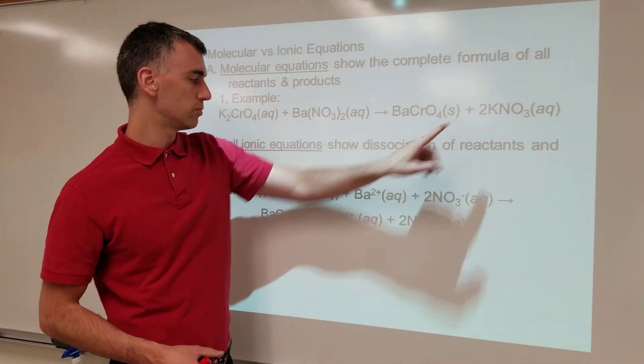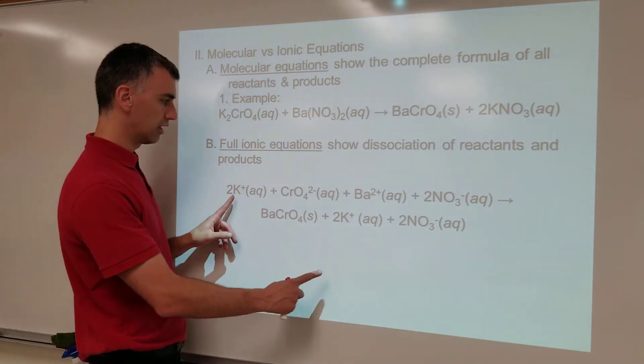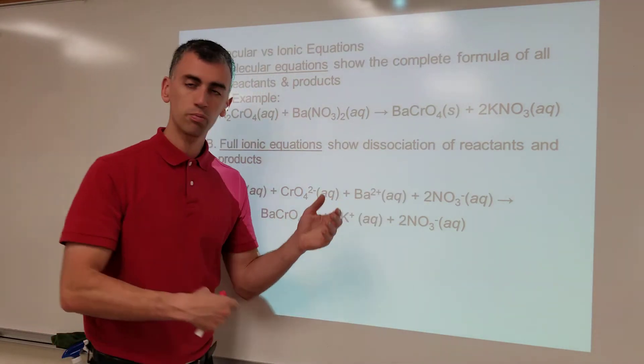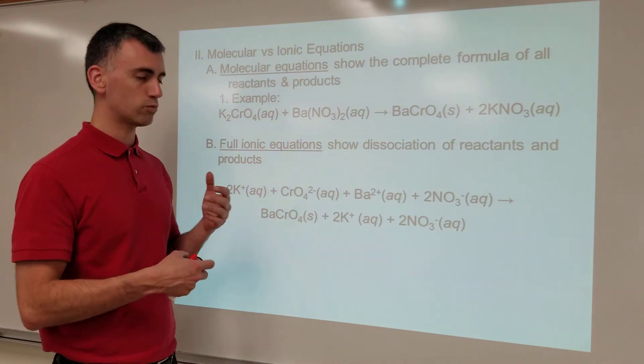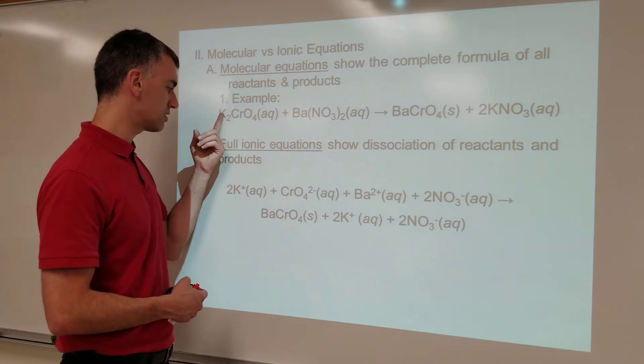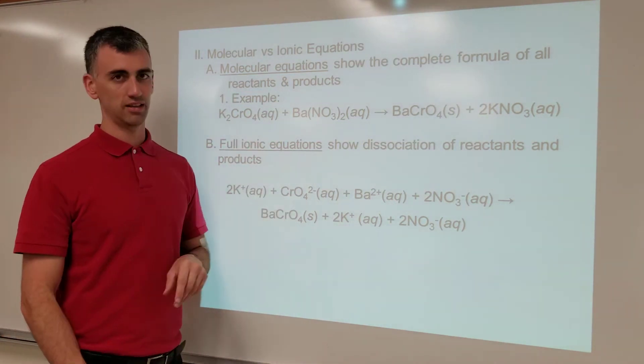Because you'll notice the other thing, two potassium nitrates, so two potassiums, two potassiums, two nitrates, two nitrates. So you notice it balances out. Two potassiums, two nitrates, and all the principles of a balanced equation apply. We're just recognizing reality that, yes, this might be the form of what you put in, but as soon as it hits the water, this turns into this. And this is what's actually in the beaker.